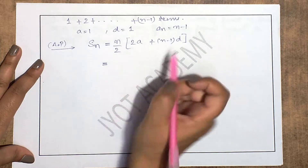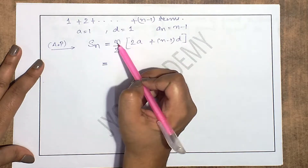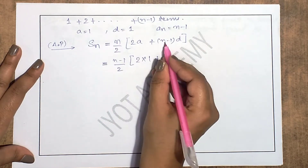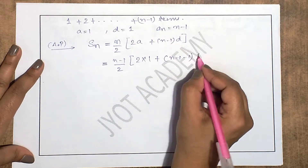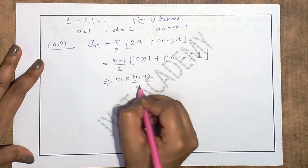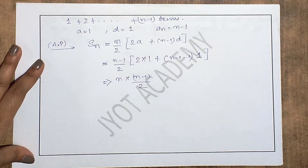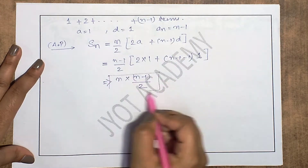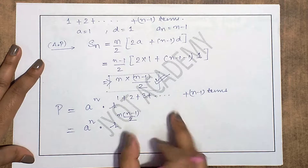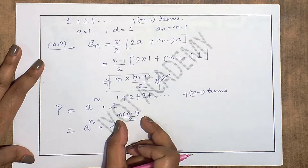In this AP, the number of terms is (n-1). So wherever n appears in the sum formula, we substitute (n-1). With a=1, n replaced by (n-1), and d=1, we calculate: S = (n-1)/2 × [2·1 + (n-1-1)·1] = n(n-1)/2. So the exponent of r in our product is n(n-1)/2.